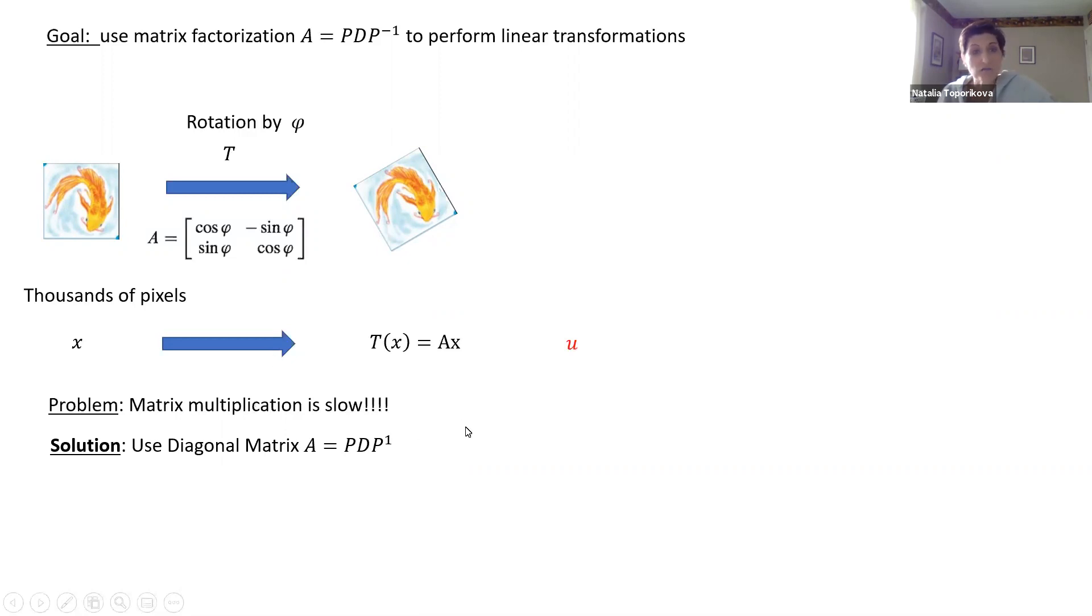So instead of our original pixel, which we call X, we actually do what mathematicians call change of variables. We're actually dealing with a different vector, let's call it U, which is just our original vector X but now is in new basis. And we take this vector U and we transform it to its image, we call it T(U), and this transformation is carried out by the matrix D, which is a diagonalized matrix and very easy to multiply because diagonal matrices are pleasant. They have zero everywhere except for the main diagonal.